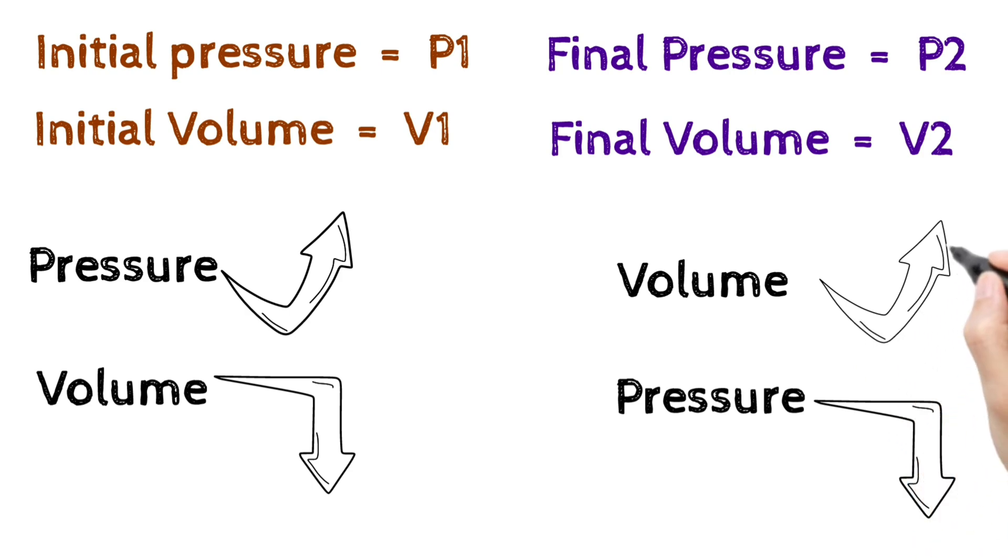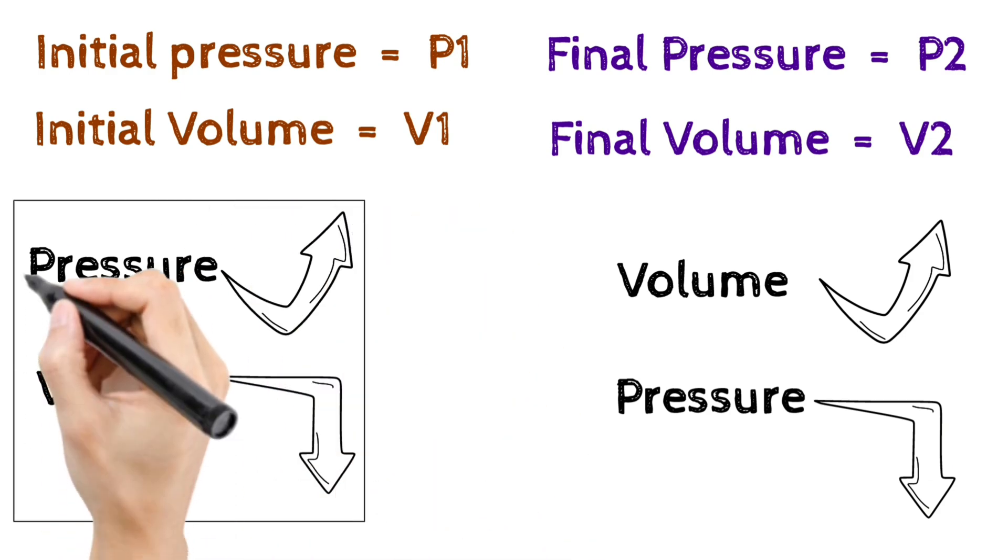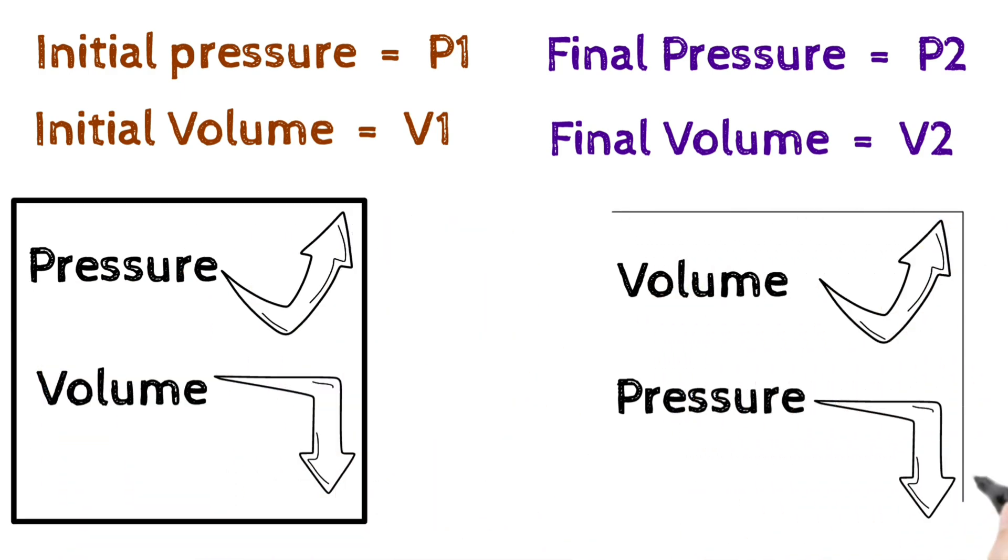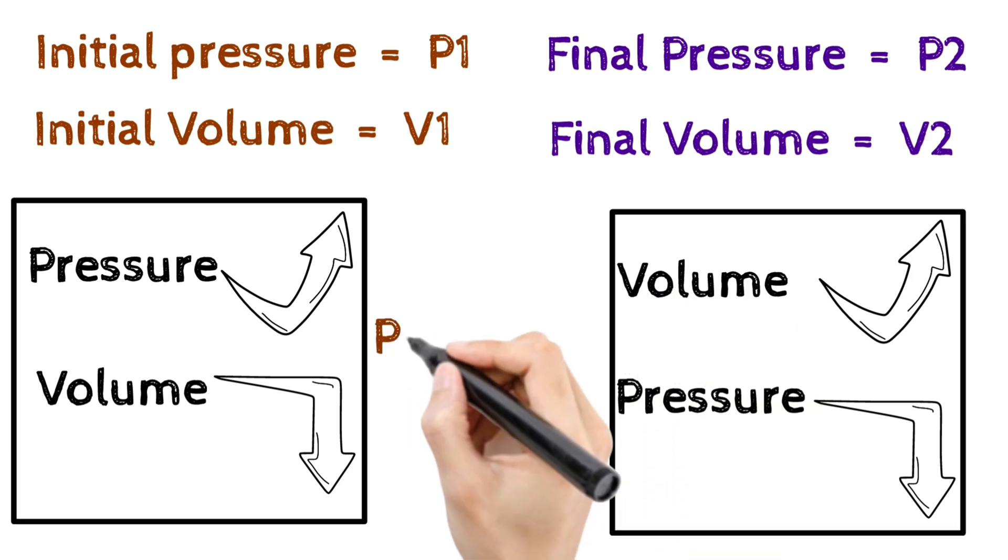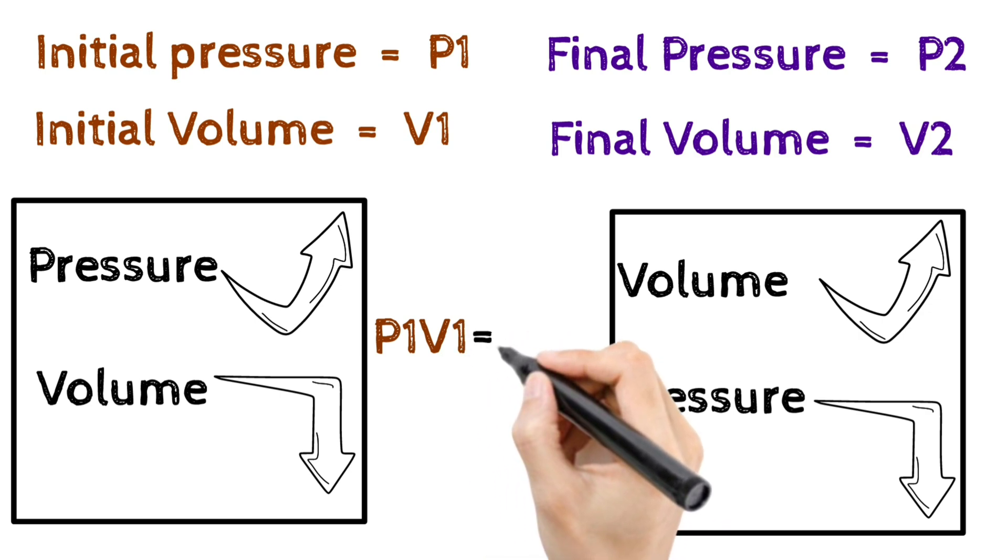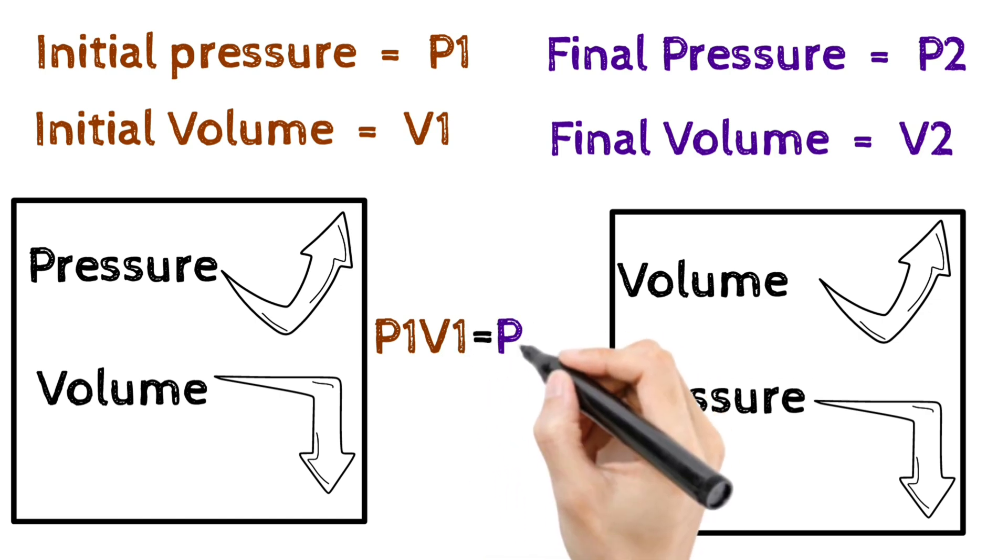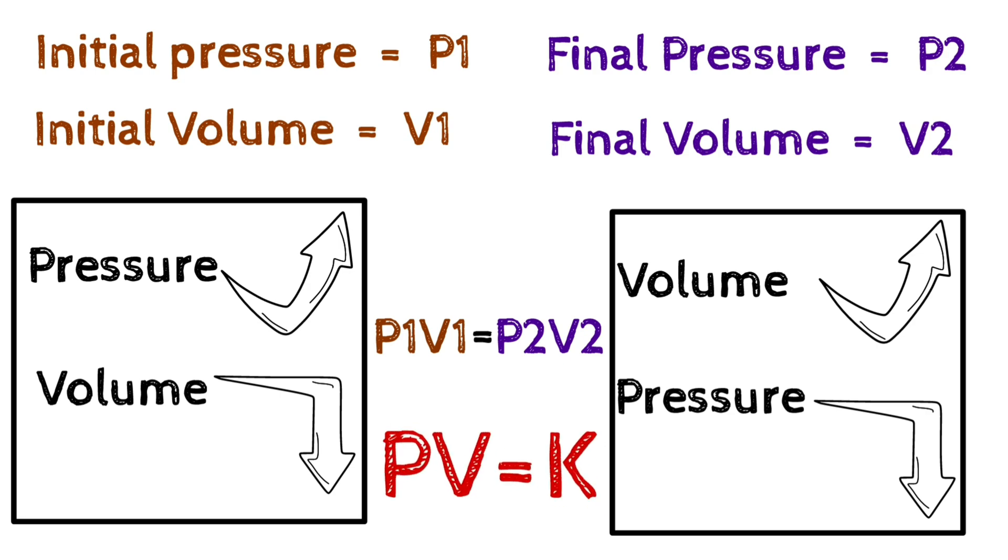This change will happen in a certain way so that the product of initial pressure and volume will always be equal to the product of final pressure and volume of the gas. So that means initial pressure P1 multiplied by initial volume V1 will always be equal to the final pressure P2 multiplied by final volume V2 because from Boyle's Law we have learned that the product of pressure and volume will always be a constant.